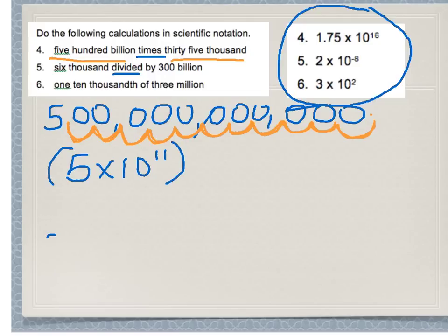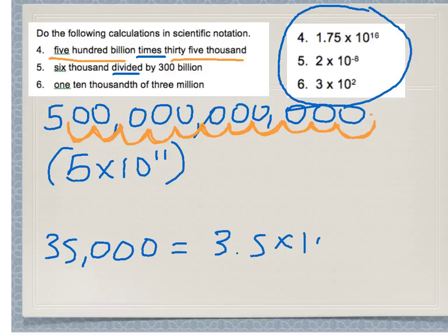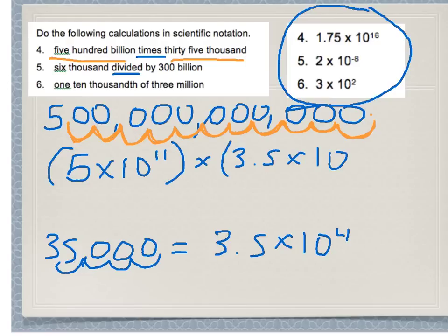Now we need to turn 35,000 into scientific notation as well. That is going to equal 3.45 times 10 to the 4th. You can count four decimal places yourself to verify. So these are the two numbers we're multiplying: 5 times 10 to the 11, times 3.45 times 10 to the 4th.